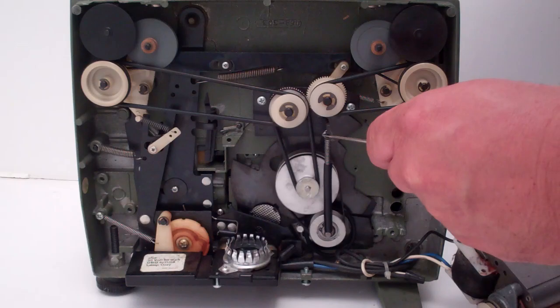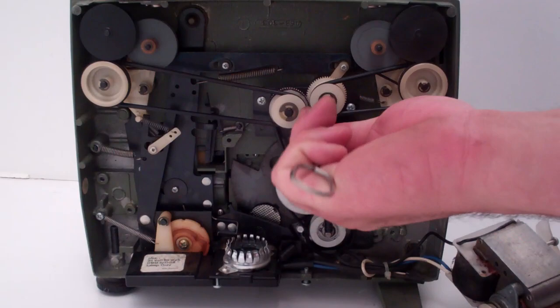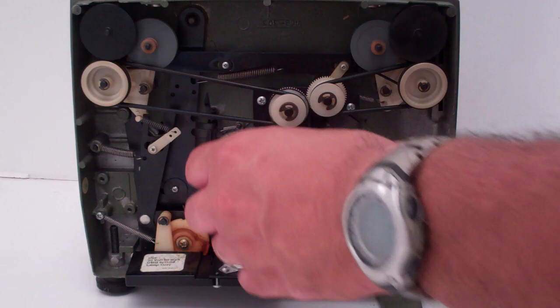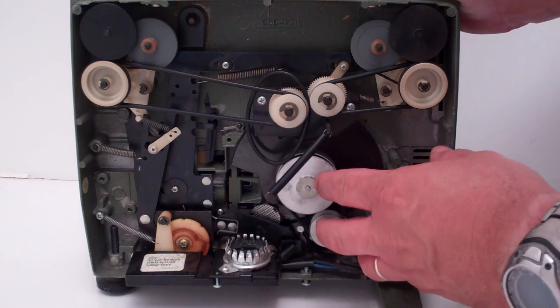Next thing you're going to want to do is remove this spring. Actually, it's probably easier to remove it off the bottom down here. Here we go. Next thing is take this belt off. Just leave it hanging for now because we're going to concentrate on the motor area.